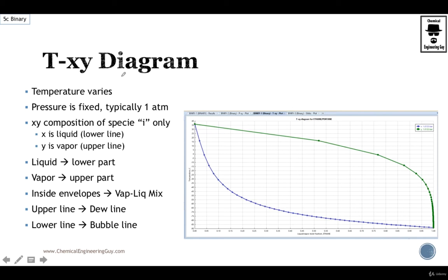So this is a T-xy diagram. As the name implies, we're going to vary temperature versus the composition of any of the two binary components. So typically we fix the most volatile one, but you can choose whatever you want.